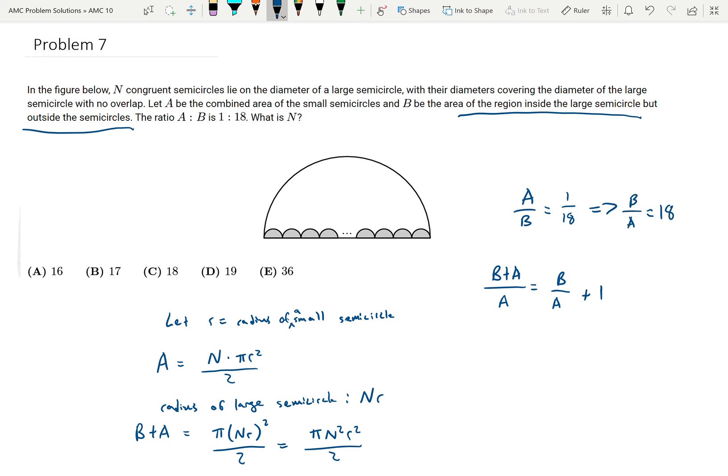I know that B over A, if you manipulate that equation, you get that B over A is equal to 18. So therefore B over A plus 1 is just 18 plus 1 which is 19.